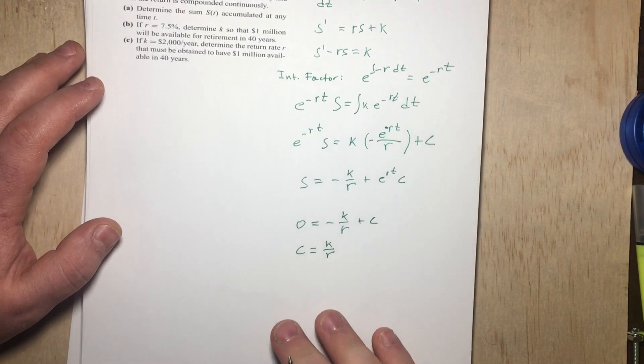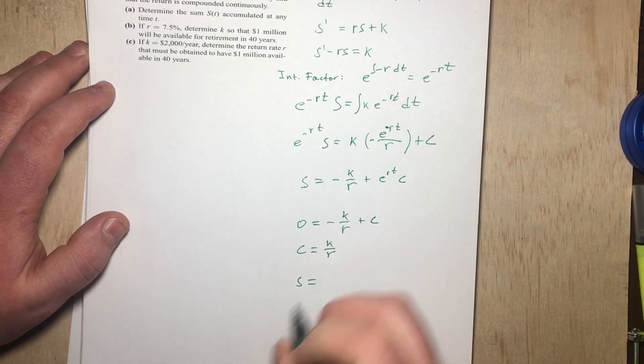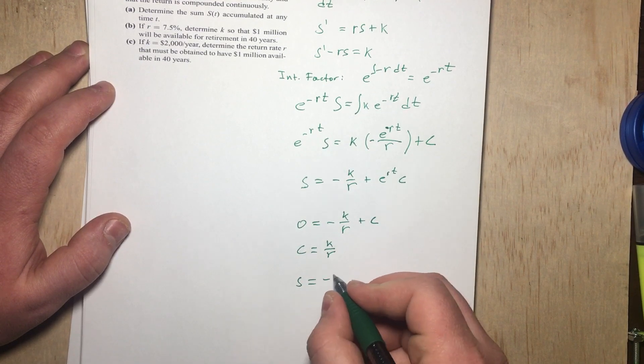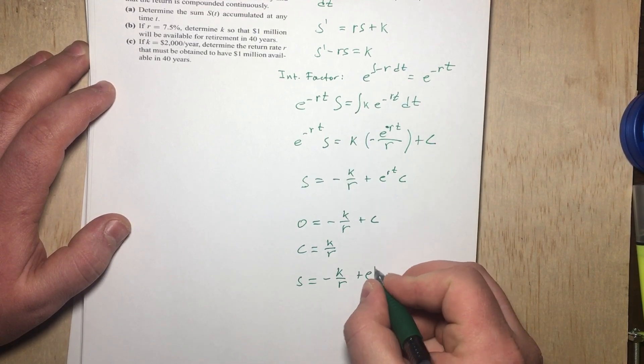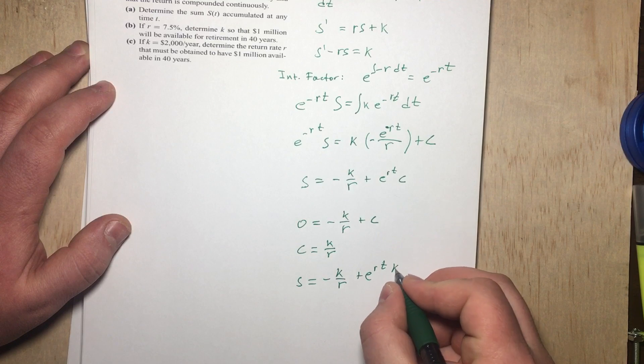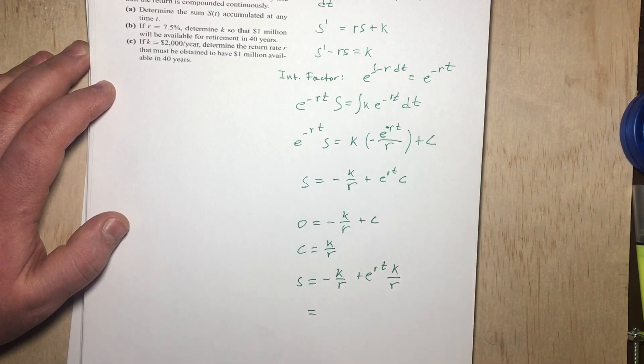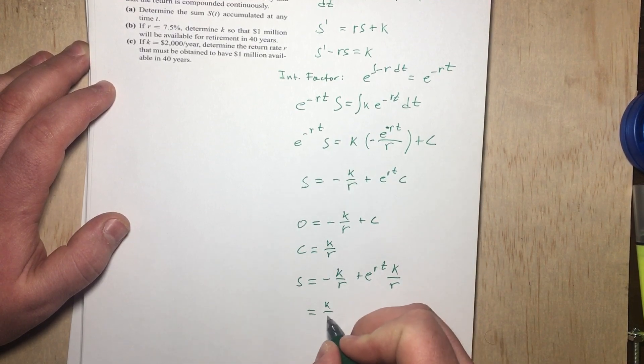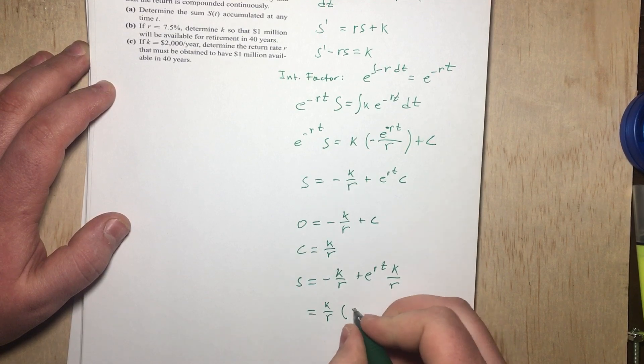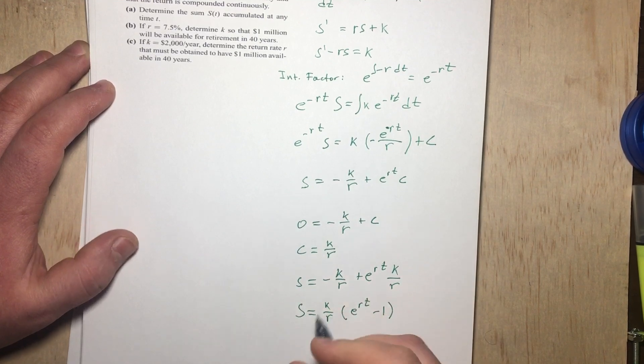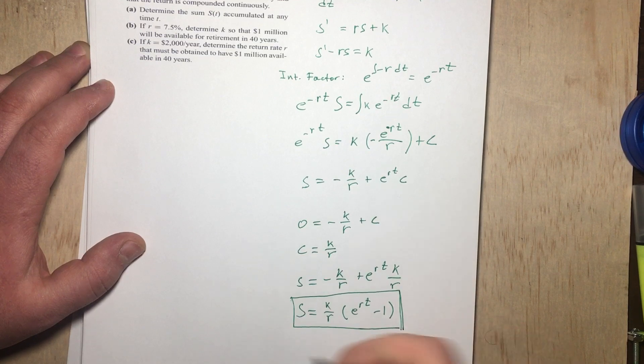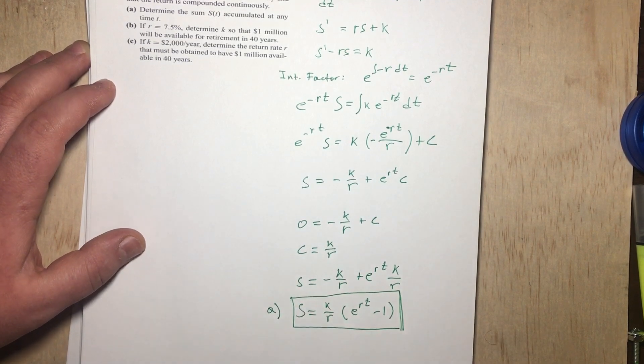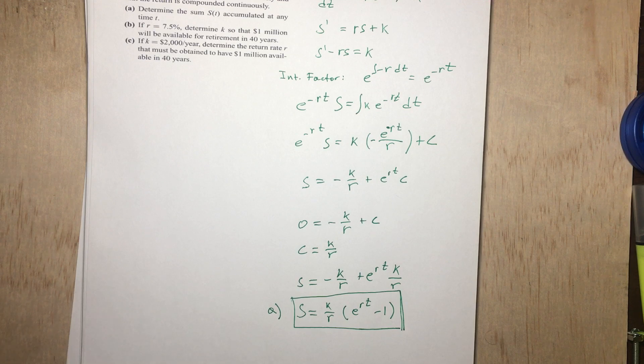Now that we have C, we can rewrite the equation. We have -K/R. Plug in C over there. We have e^(Rt) times K/R. So we can factor out K/R, and we will be left e^(Rt) - 1. So that is the answer to part A right here. We found the equation S(t).